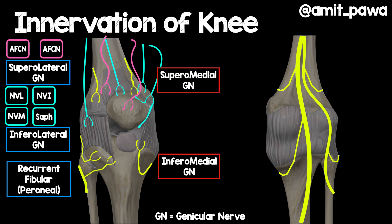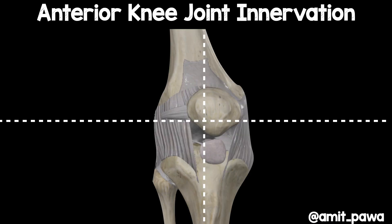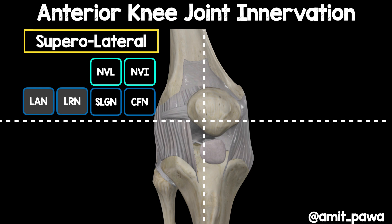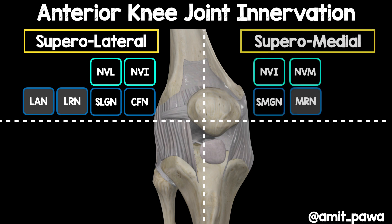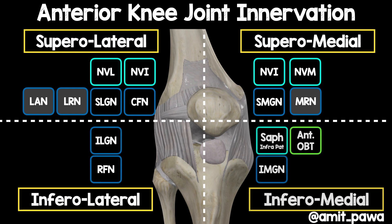What about the back of the knee? We can add in the obturator nerve and branches from the sciatic nerve — together these form the popliteal plexus, an important group of nerves responsible for innervating the back of the knee, which can contribute to pain after knee arthroplasty. Looking at the anterior aspect in quadrants: the supralateral quadrant includes contributions from the lateral articular and lateral retinacular nerves; the supramedial aspect includes the medial retinacular nerve. The innervation of the knee is much more complex than we initially thought.